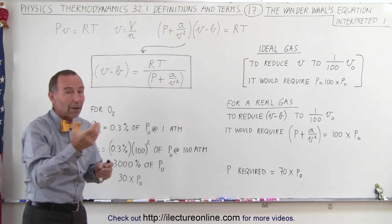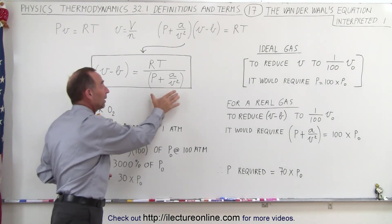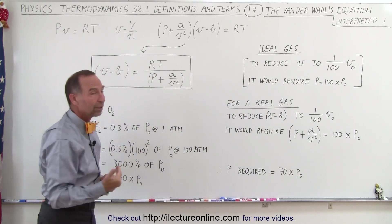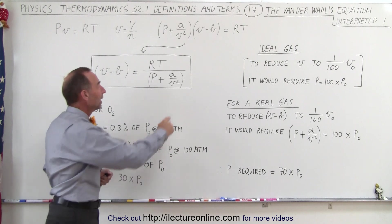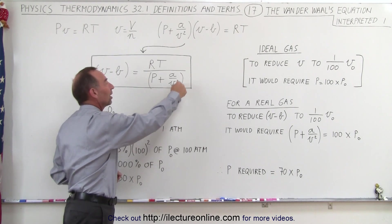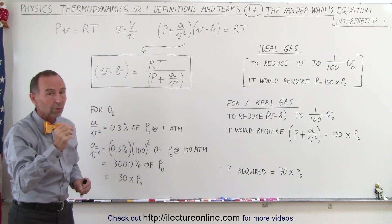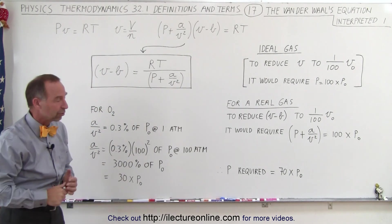So for a barometer that actually measured the pressure, we can tell no difference. It still would be 100 times the original pressure. We just have to realize, with the Van der Waals equation, that 30% of that increase is really accounted for by this term, but what we'll actually measure will still be 100 times the original pressure.